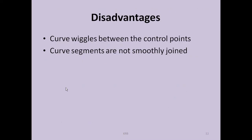The disadvantages of the Lagrange interpolation curve technique are: the curve wiggles between the control points, curve segments are not smoothly joined, and with a large number of points the curve tends to be rough rather than smooth. It is recommended to keep the value of the step size as small as possible so the simulated curve looks smooth. This was all for today — we covered arc generation using DDA, arc generation using the interpolation technique, specifically the Lagrange technique, and the concept of interpolation.